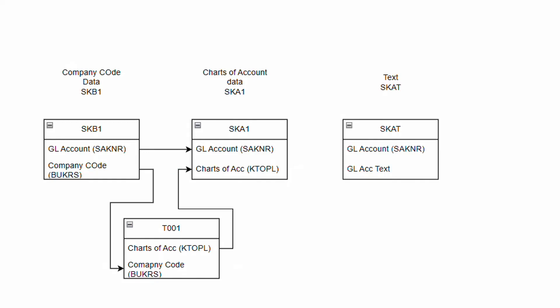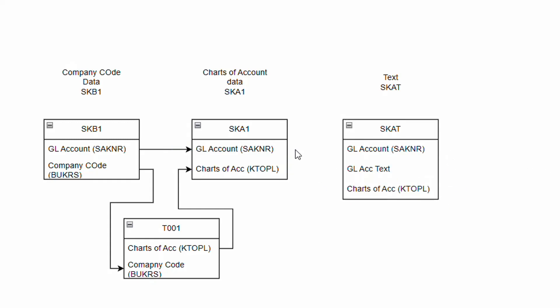Now we have both the company code section and charts of account section of GL master data. We will also link this with the text table SKAT. In SKAT we also have charts of account (KTOPL), making it easy to map between SKA1 and SKAT. We map GL account SAKNR with SAKNR in SKAT and charts of account KTOPL with KTOPL to fetch the GL account text. This is how we logically link different fields so the system does all this mapping in the background and shows a combined output.